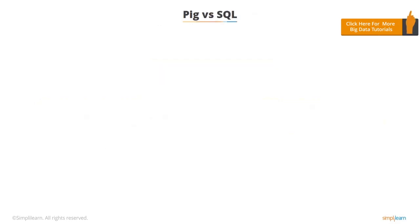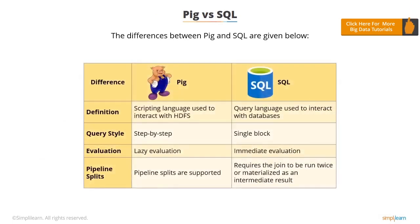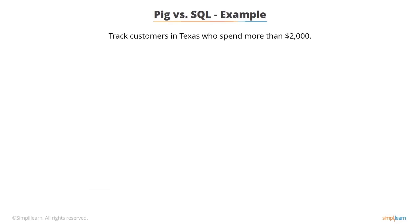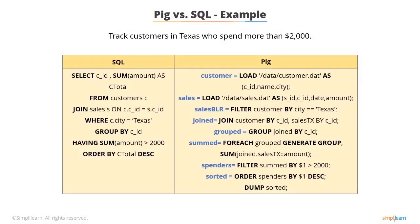Since we have already learned about Hive and Impala, which work on SQL, let's now see how PIG is different from SQL. The first difference is that PIG is a scripting language used to interact with HDFS, while SQL is a query language used to interact with databases residing in the database engine. In terms of query style, PIG offers a step-by-step execution style compared to the single-block execution style of SQL. PIG does a lazy evaluation, which means data is processed only when the store or dump command is encountered, while SQL offers immediate evaluation of a query. Pipeline splits are supported in PIG; however, in SQL, you may need to run the JOIN command twice for the result to be materialized as an intermediate result.